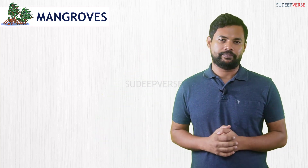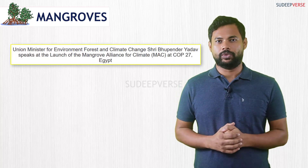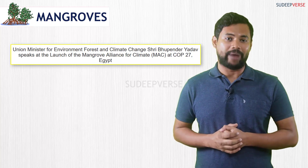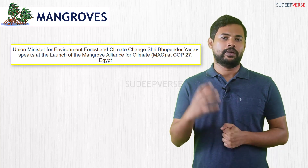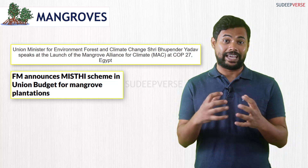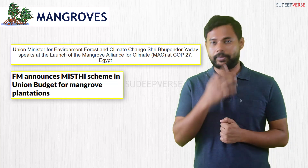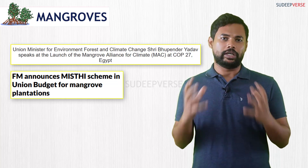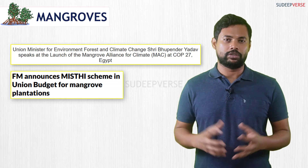Welcome to Prelims Affairs, where we discuss issues from a prelims perspective. Today the issue we will discuss is mangroves. Mangroves have been an important focus area of the Government of India. In COP 27 of 2022, they formed the Mangrove Alliance for Climate, realizing the importance of mangroves in fighting climate change. So make sure you develop a good factual dimension on this concept.